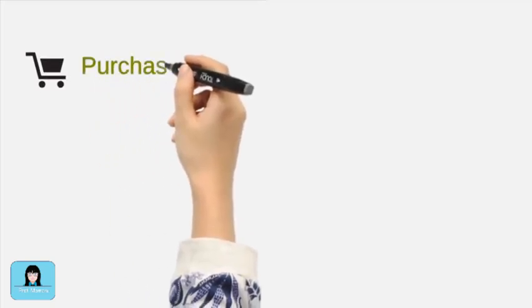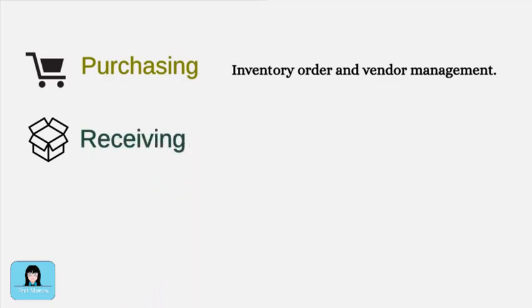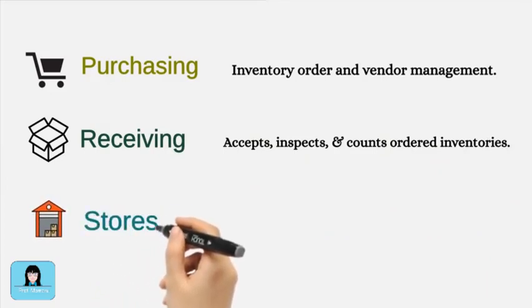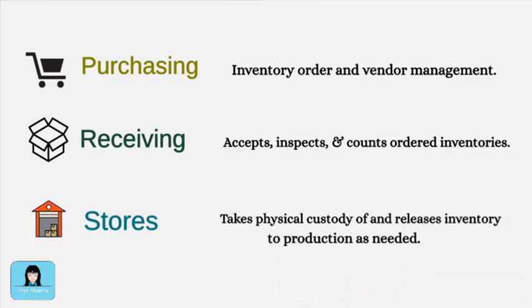The purchasing function is responsible for ordering inventory from vendors when inventory levels fall to their reorder points. Also, purchasing manages and maintains good relationships with vendors. The receiving function accepts the inventory previously ordered by the purchasing function. Finally, the stores function takes physical custody of the inventory received and releases these resources into the production process as needed.